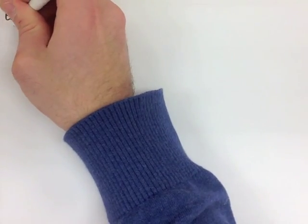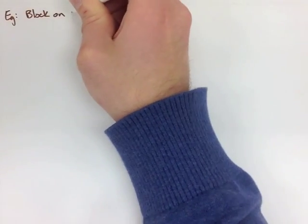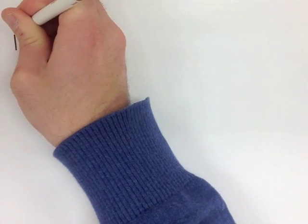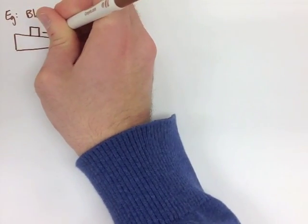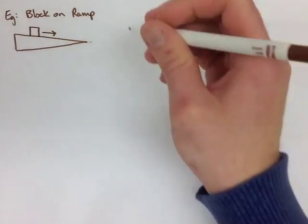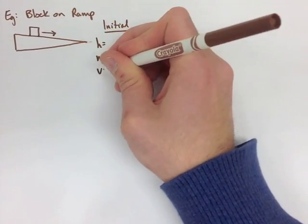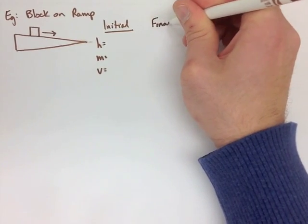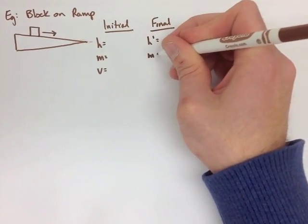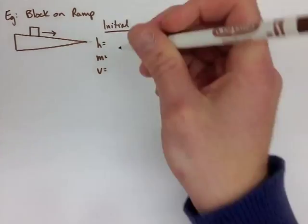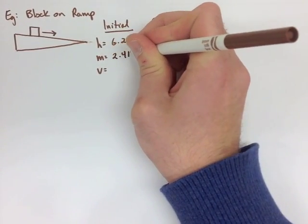Looking at the two examples at the bottom of the page, first we have the block moving down the ramp. We're going to make our HMV charts for the block. The initial height is 6.2 meters. The mass in both cases is 2.4 kilograms. And the initial velocity is 0 meters per second. We know the final height is going to be 0 meters.